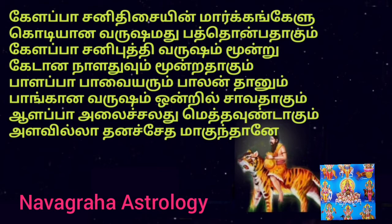In the next two lines, Sage Pulipani says that the life partner and children will face a lot of hardships. Especially if they are running Maraka Dasha, they may even face death. In the last two lines, he says that the person facing Saturn Dasha, Saturn Antar Dasha will have a very hectic life with a lot of work pressure and stress. As a result, that person will feel tired and exhausted most of the time. Sage Pulipani also predicts a very big financial loss during the Saturn Dasha, Saturn Antar Dasha period.